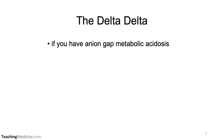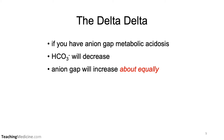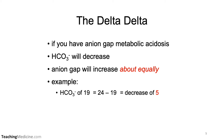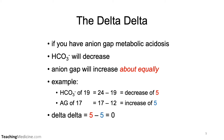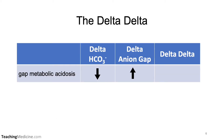If you have an anion gap metabolic acidosis, the bicarb will decrease and the anion gap will increase about equally. Remember the bicarb is in the anion gap equation, so if your bicarb goes down by 10, the anion gap should go up by 10. For example, a bicarb of 19 means a delta bicarb of 5, and an anion gap of 17 is a delta anion gap also of 5, so the delta-delta is zero. In a table: for an anion gap metabolic acidosis, the bicarb goes down, the anion gap goes up, they do so equally, and therefore the delta-delta is zero.